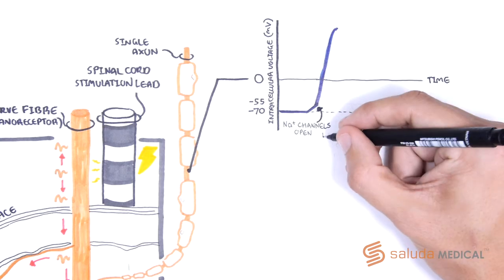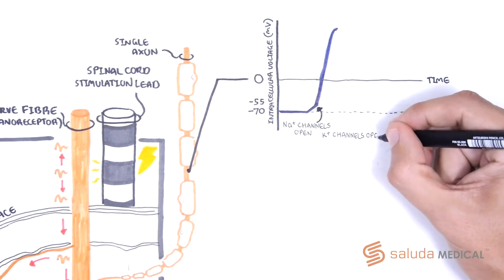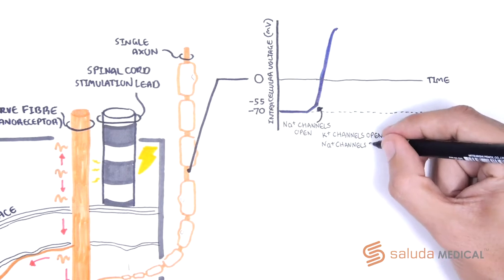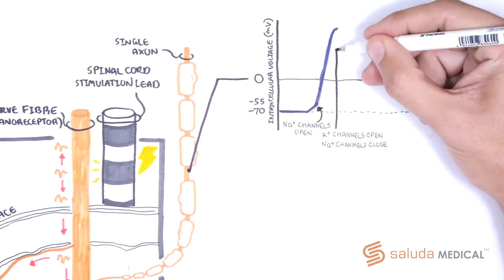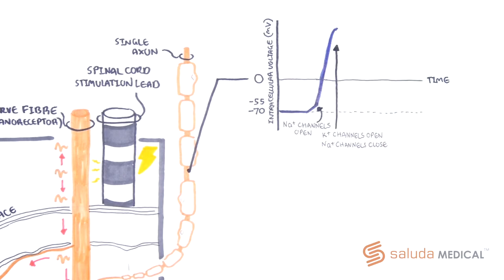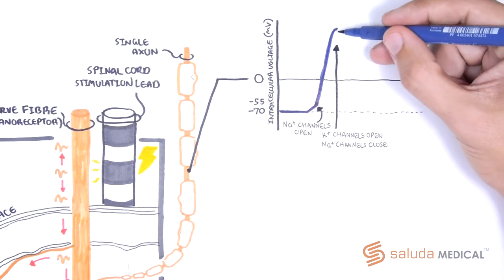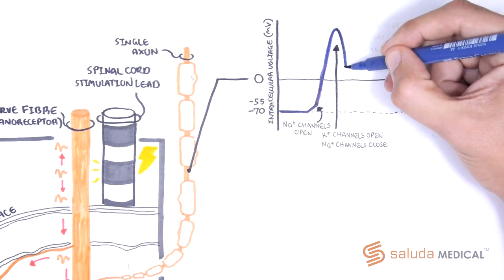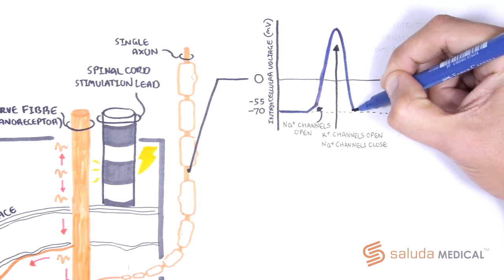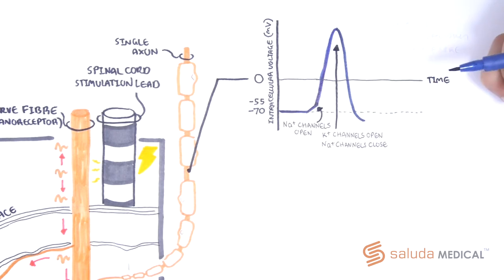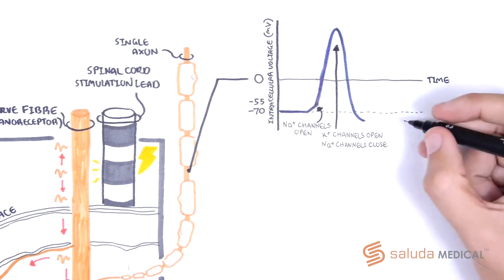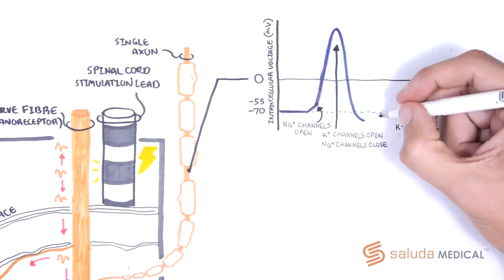Next, potassium channels open to allow potassium ions to move out of the cell on their own concentration gradient. This is known as repolarization. And at this time, the sodium channels also close. As potassium moves out, the intracellular potential becomes more negative again, overshooting the original baseline, known as hyperpolarization, before potassium channels close and the ion pumps work to restore the resting membrane potential.